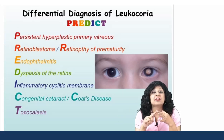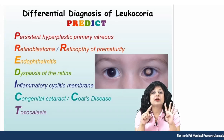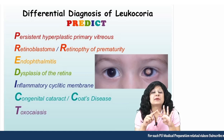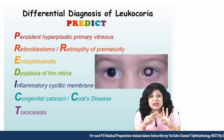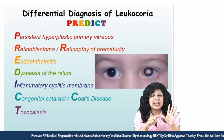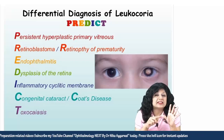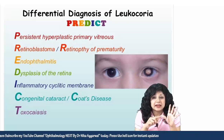E stands for endophthalmitis. D stands for dysplasias of the retina. And I stands for inflammatory cyclitic membrane.